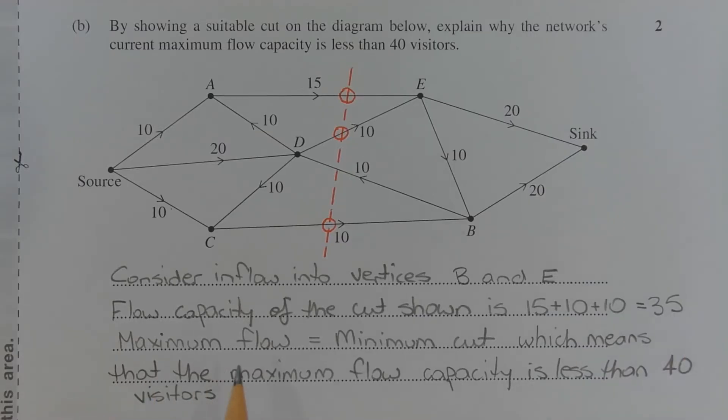Now the maximum flow is equal to the minimum cut. And since we have been able to find a cut that's less than 40, the maximum flow capacity is less than 40 visitors.